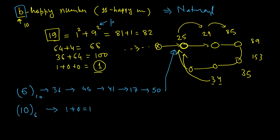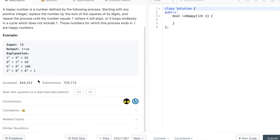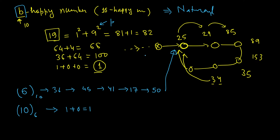Now let's look at the LeetCode problem. It says starting with any positive integer — which confirms it's for natural numbers only — and uses the same example of 19. The first solution is simple and may remind you of finding a loop in a linked list. We keep keys in a set, traverse the sequence, and once we reach a number already in the set, we declare there's a loop. Similarly here, we store sums in a hash set, and if we encounter a number already present, we return false.